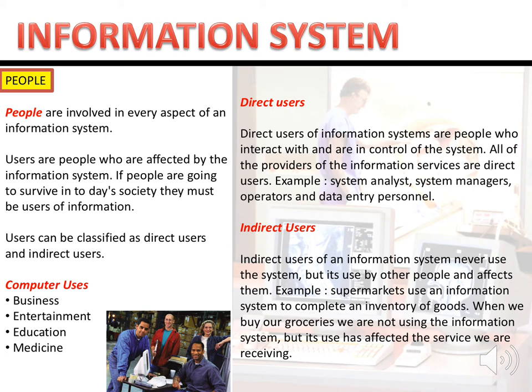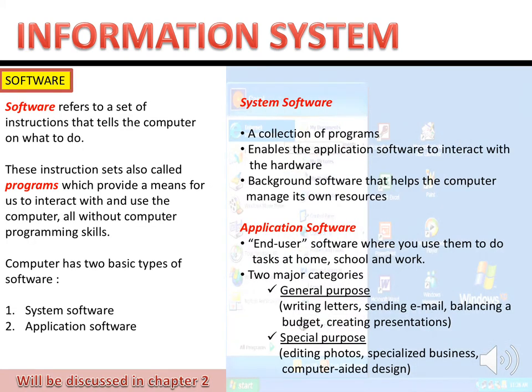The next part of the information system is software. Software refers to a set of instructions that tell a computer what to do. There are two types: system software and application software. System software is a collection of programs that enable application software to interact with the hardware — for example, an operating system (OS), which manages programs in your computer, laptop, or smartphone.